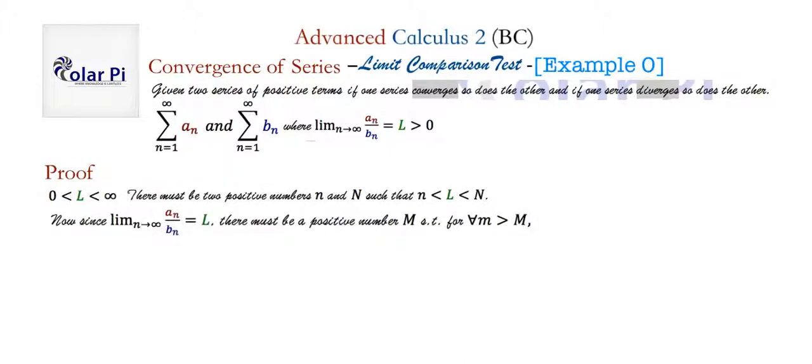Now, because the limit as n goes to infinity of a sub n divided by b sub n is equal to L, there must be a positive number capital M such that for all other numbers little m bigger than it, we can pin the quotient a sub n divided by b sub n between little n and capital N. Now, this might be the hardest thing to understand in this proof.